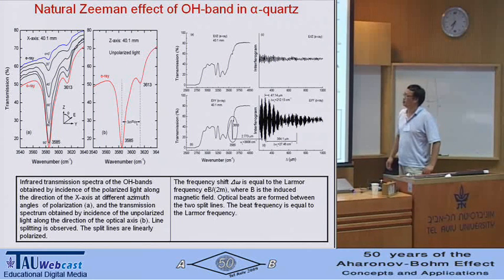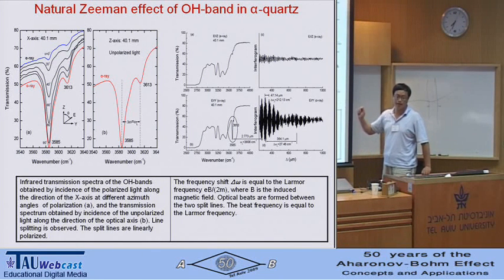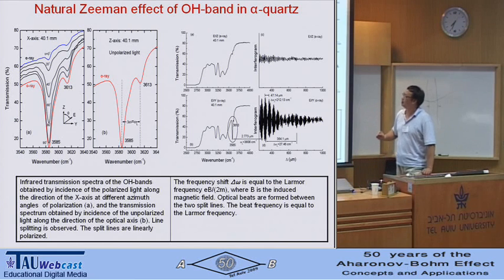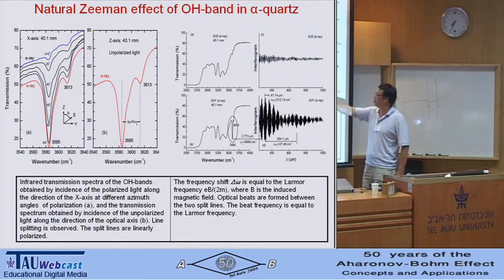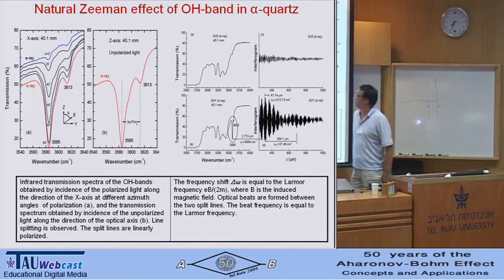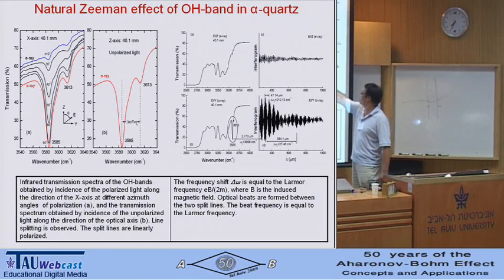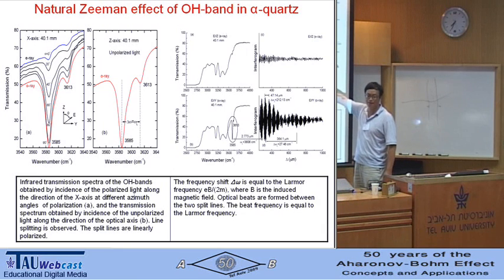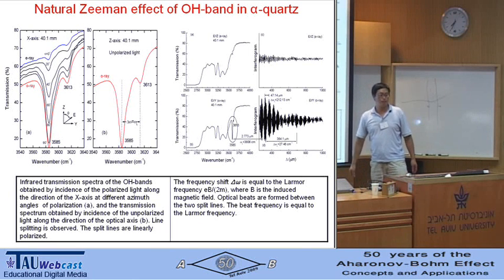The OH impurity in alpha quartz provides a means to probe the crystal field. We see that there is splitting at the infrared absorption band observed in the infrared. The absorption band is found to be linearly polarized, and the optical beat is observed in the Farrogram. The beat frequency is equal to the Larmor frequency.